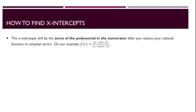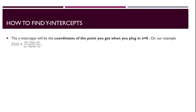Next, we'll find the x-intercepts. The x-intercepts are the zeros of the numerator after you reduce your rational function to simplest terms. The x minus 2 factor reduces, leaving only x minus 1 in the numerator. Setting that equal to 0, we get x equals 1, so our x-intercept is at (1, 0). For the y-intercept, we plug in x equals 0 into the reduced function: 0 minus 1 over 4 times 0 minus 3 gives negative 1 over negative 3, which reduces to 1/3. So our y-intercept is at (0, 1/3).